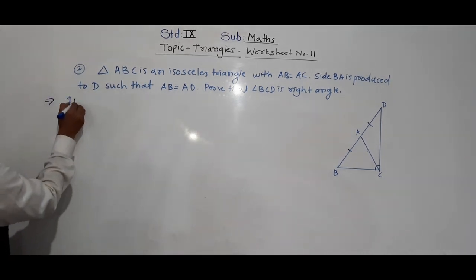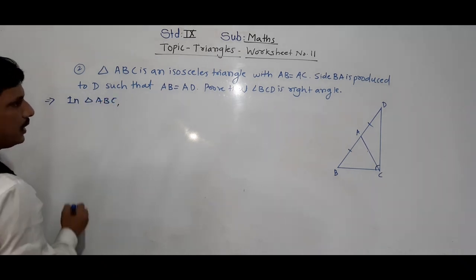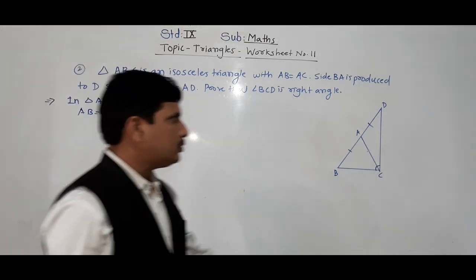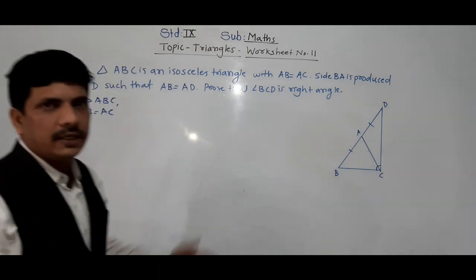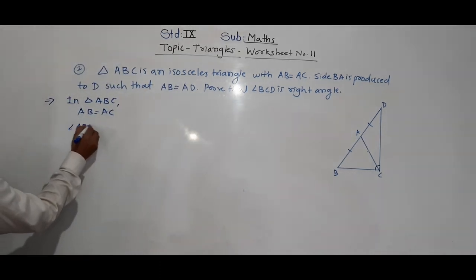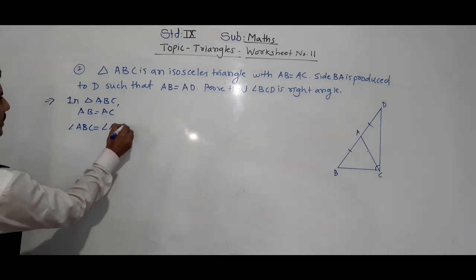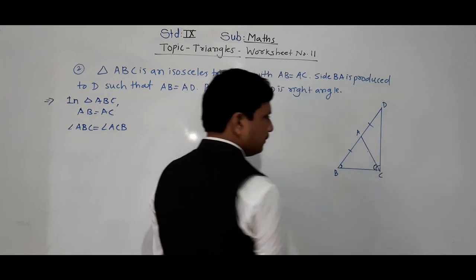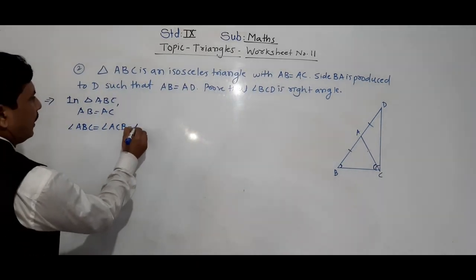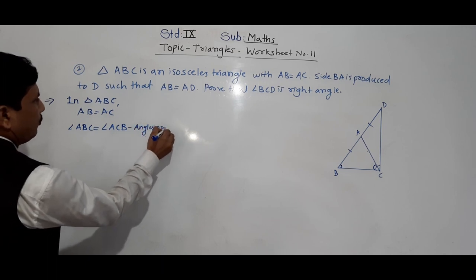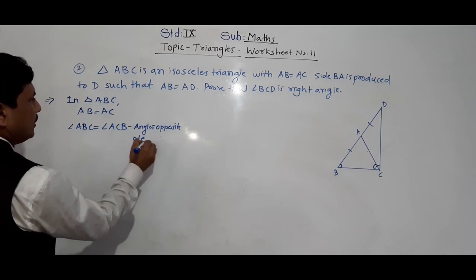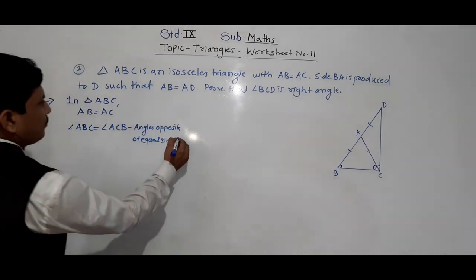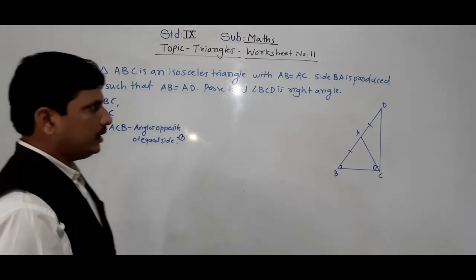In triangle ABC, AB is equal to AC. So the angles opposite the equal sides are equal, meaning angle ABC is equal to angle ACB. This is our first result.